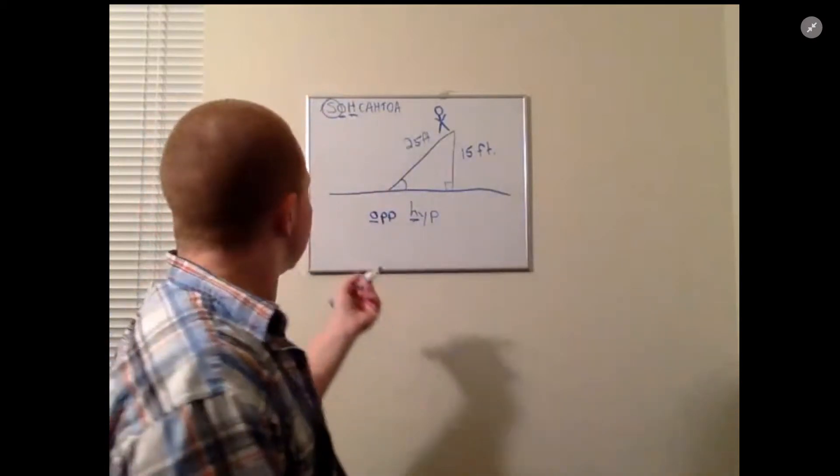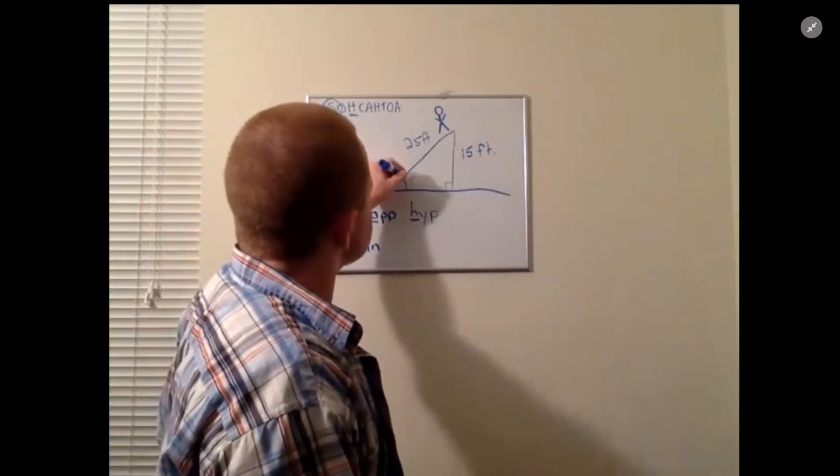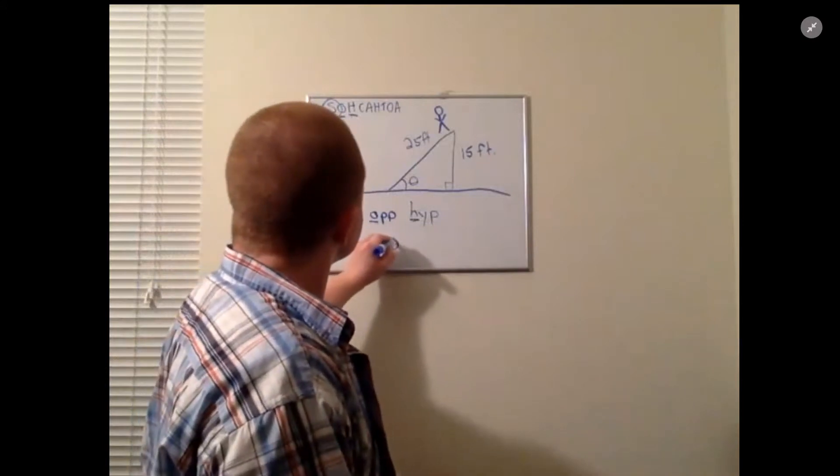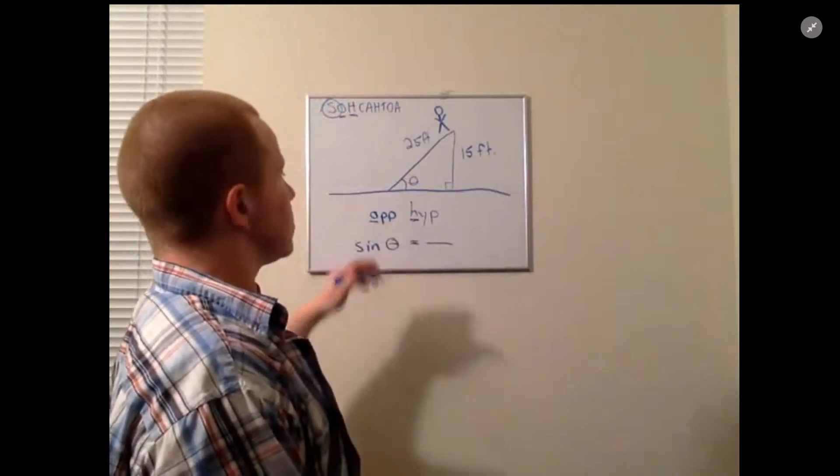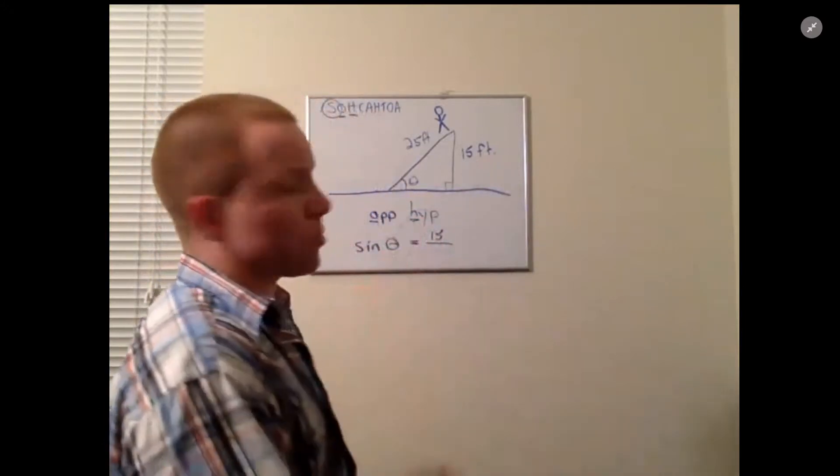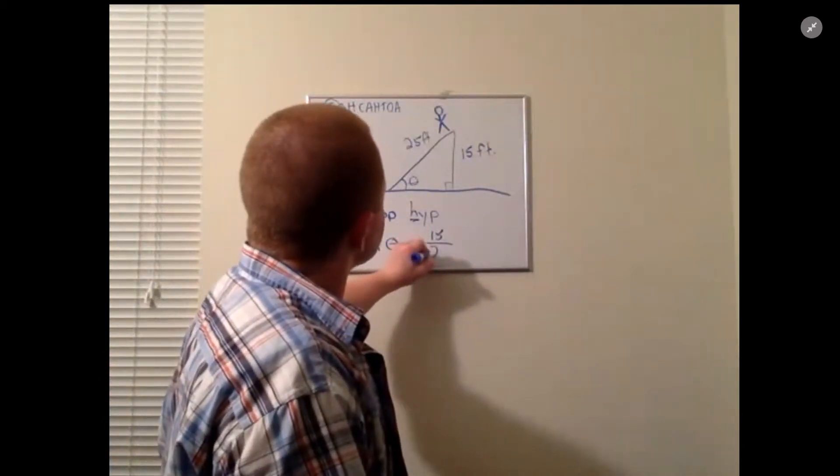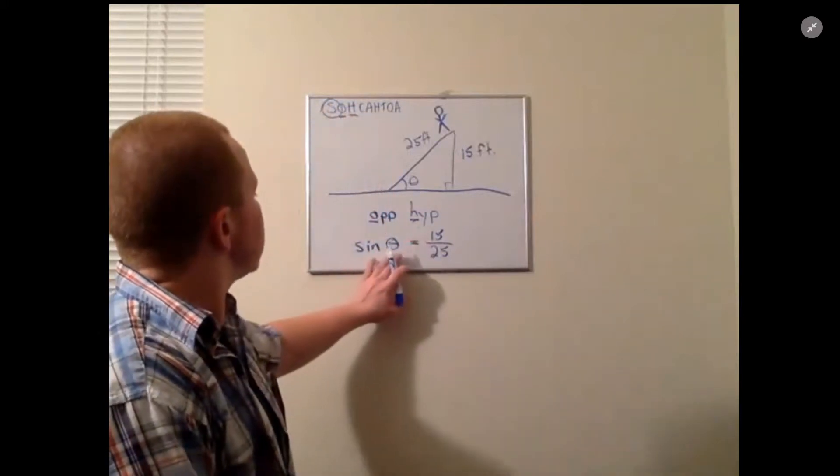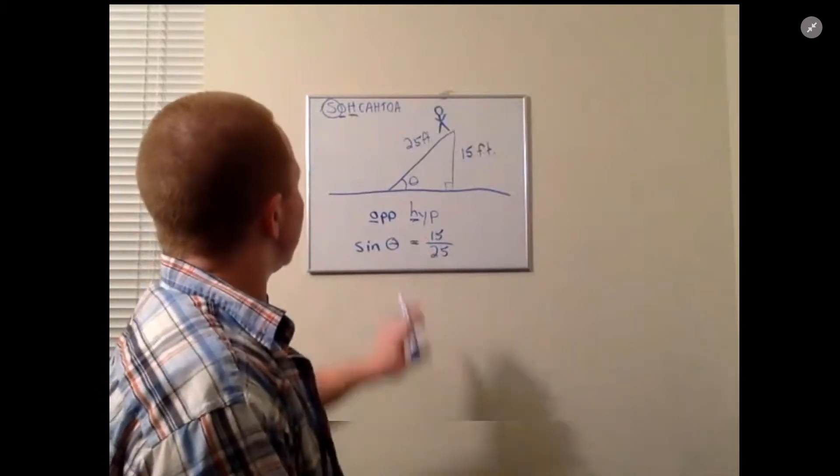Now we have sine of our angle, so we can just say that's theta or x, whatever you want to use. I'll use theta here. It equals opposite over hypotenuse. So the opposite we said was 15, let me just put the numbers in here, we don't need the units, over the hypotenuse which is 25.